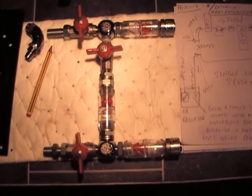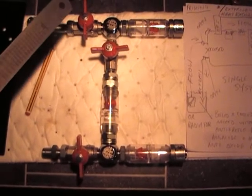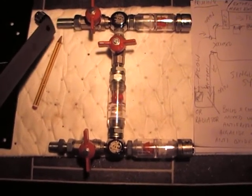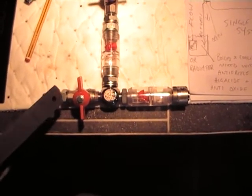This is about the valve system for water cooling under the Danger Den system. Basically you've got a bulkhead fitting here. There's another one down here, you can see where the nut spins in that will lock it into the case.